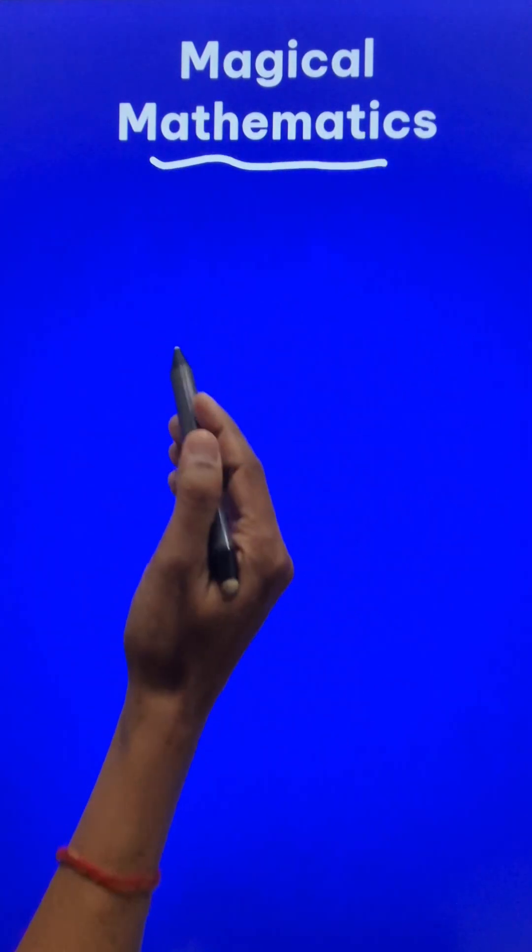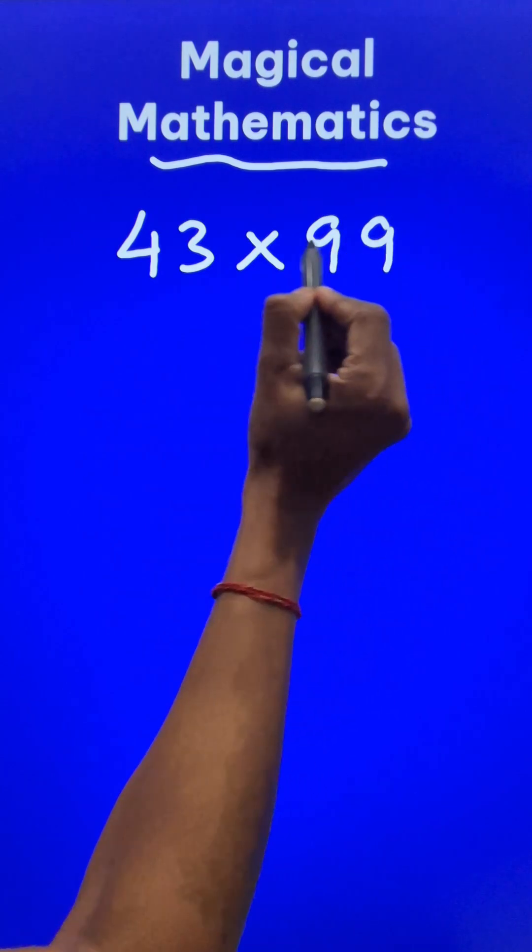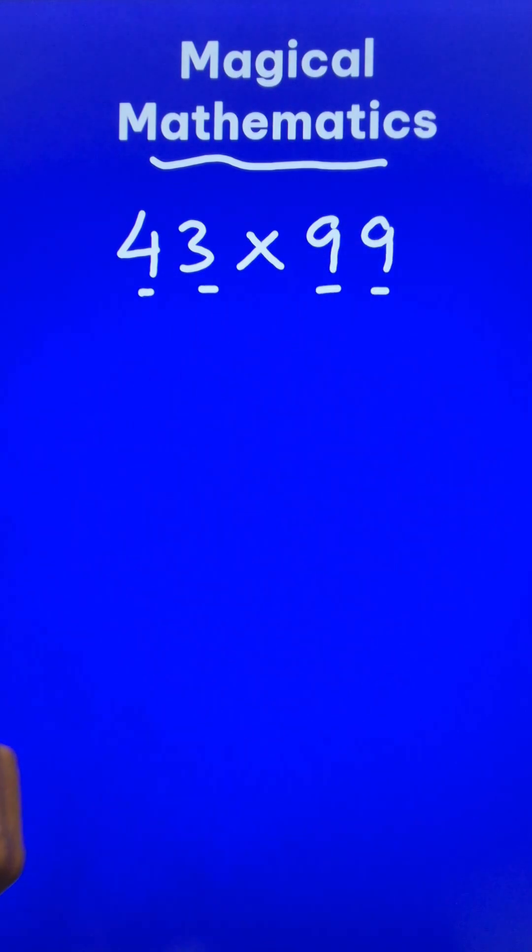Let us multiply numbers mentally. Suppose you have to do 43 times 99—two digits here and two nines here.